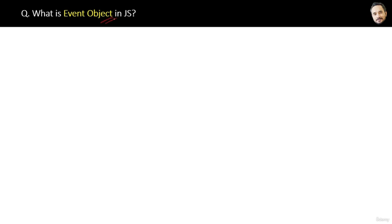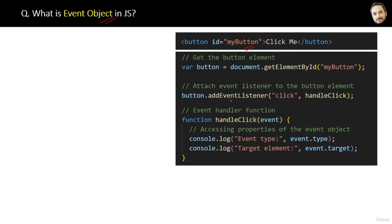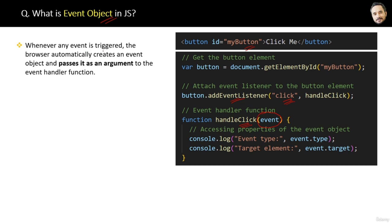What is an event object in JavaScript? Suppose you have a button in your HTML, you get the reference of that button, and you add a click event to it. In the handleClick function you can see 'event' passed as a parameter. Whenever any event is triggered, the browser automatically creates an event object and passes it as an argument to the event handler function.